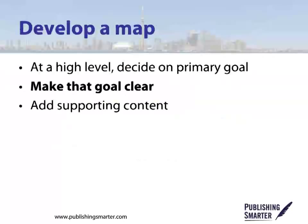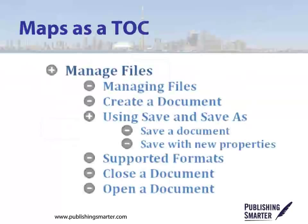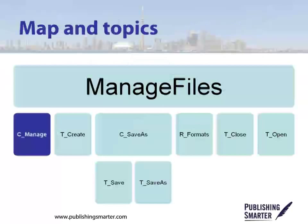Now we have an idea of the topics, but not of their type. We know we want to write about things, but we don't know if they're task, concept, or reference. It's possible that some content even bridges the topic types. To make sure we arrange topics well, we really need to plan an overall document, not just the individual topics. We need to identify a goal for the user, and then write to support them in achieving that goal. The basics of a map can be considered similar to an organizational chart, or perhaps more like a table of contents.